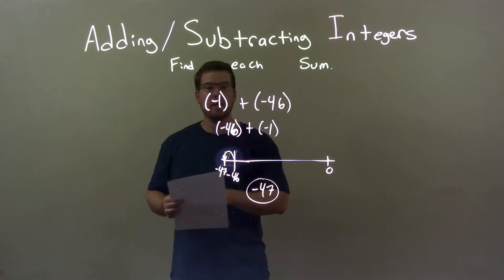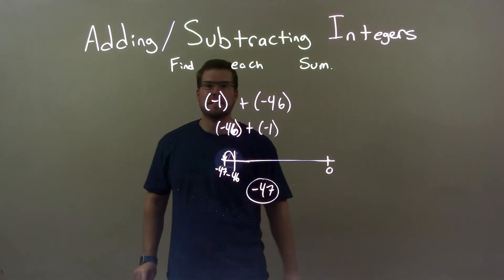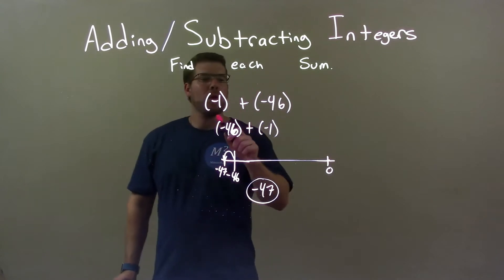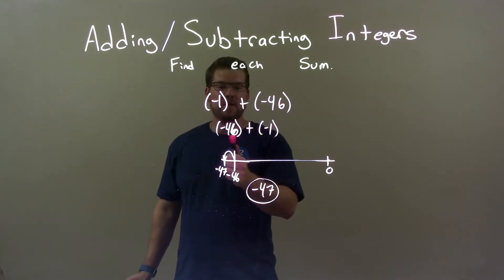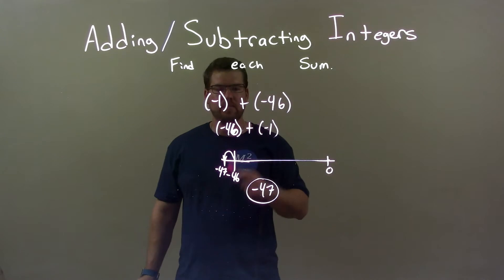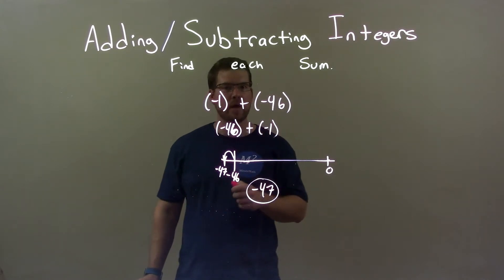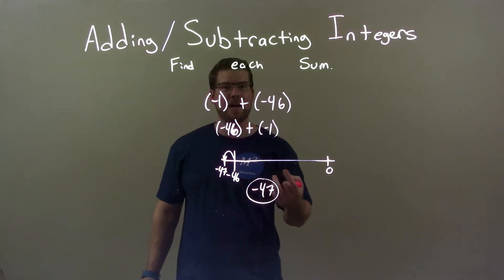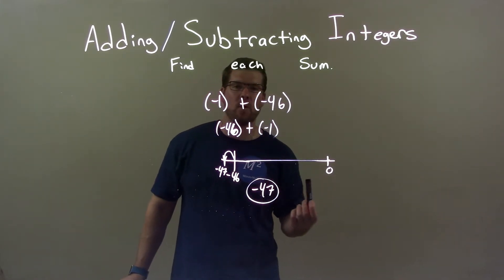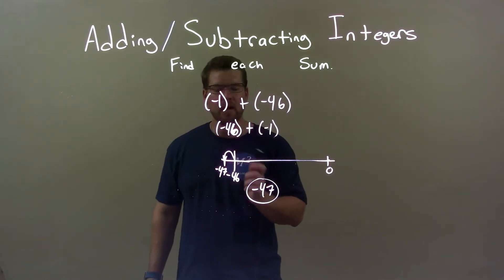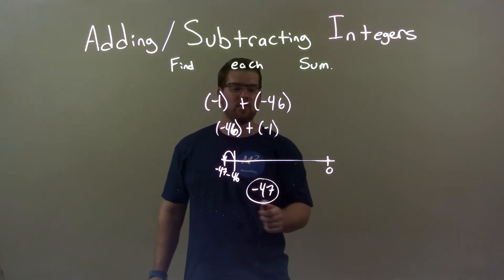Quick recap: we're doing negative 1 plus a negative 46. I rearranged it and wrote negative 46 plus a negative 1 — we're allowed to do that with addition. Then I start with negative 46, and when I add a negative 1, I move it one unit to the left, which brings it to negative 47. So our final answer is negative 47.